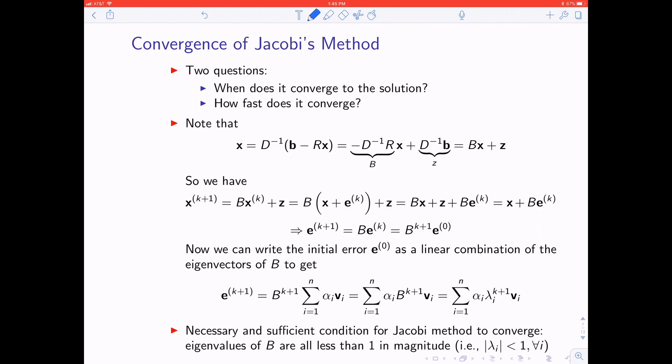It's worth asking when does this converge to the solution, and if it converges, how fast? Let's do a little algebra. Jacobi iteration says X equals D inverse times B minus Rx. We can expand this as minus D inverse Rx plus D inverse B.